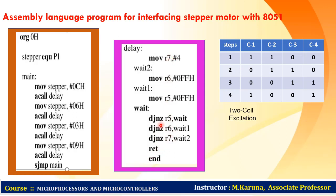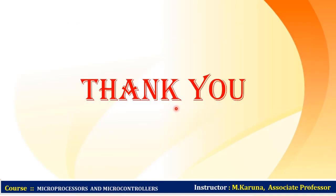Any subroutine must end with a return instruction. After completion of the delay program the controller returns to the main program and sends the next sequence. This is the complete program for two coil excitation of a stepper motor. You need to write the stepper motor principle of operation, draw the interfacing diagram, and write the program.